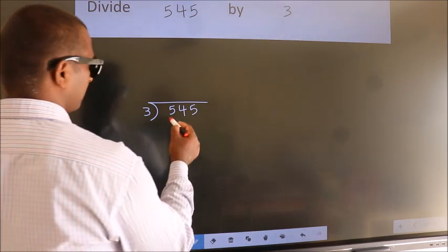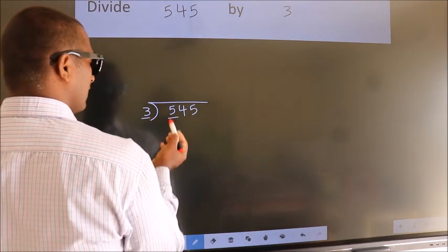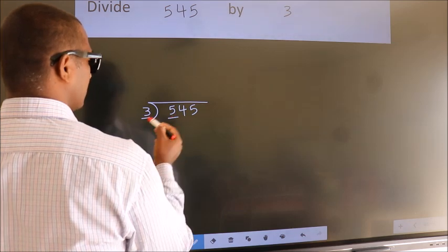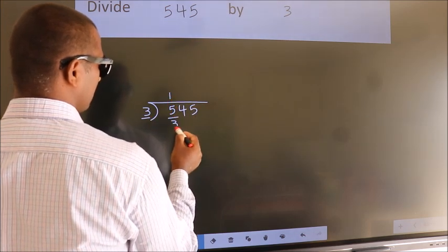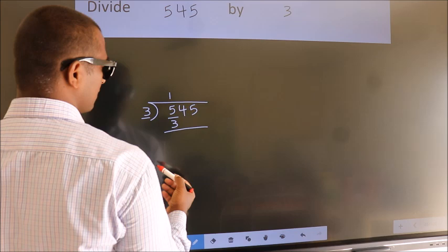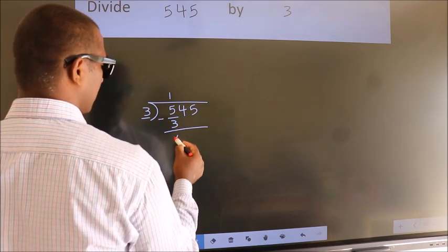Next, here we have 5, here 3. A number close to 5 in 3 table is 3 once 3. Now we should subtract. We get 2.